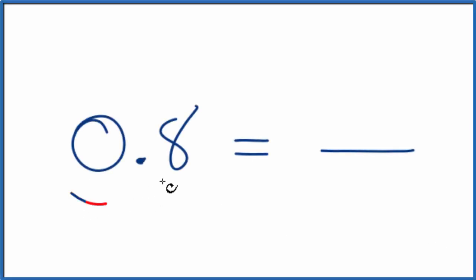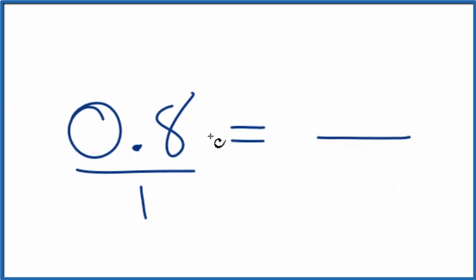Let's write 0.8 in fraction form. So we want to have a numerator over a denominator. These will be whole numbers. So we could start by putting 0.8 over 1. This is kind of in fraction form, but we don't have whole numbers.